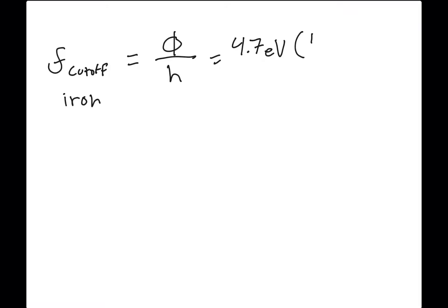To convert it we're simply going to do 1.6 times 10 to the negative 19 joules per one electron volt. Our electron volts cancel out and we're dividing by H.